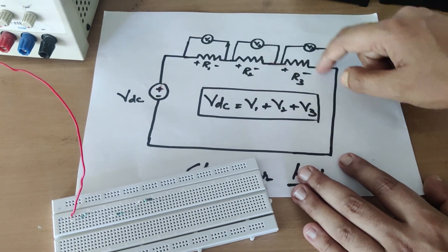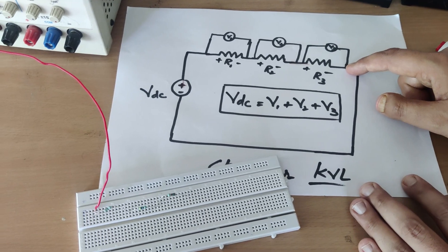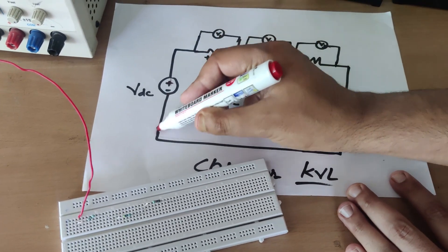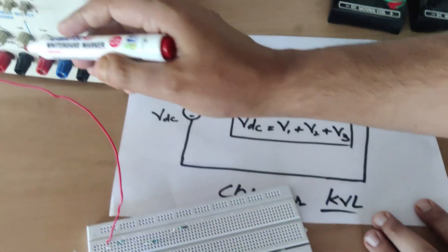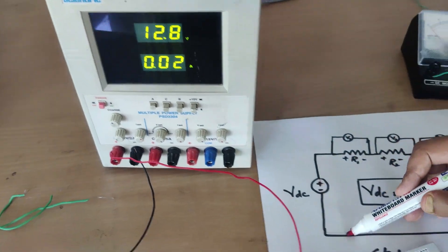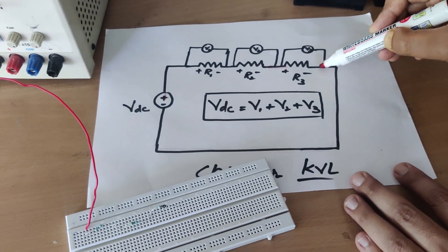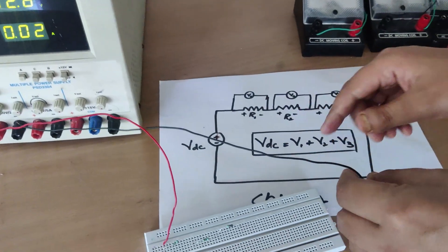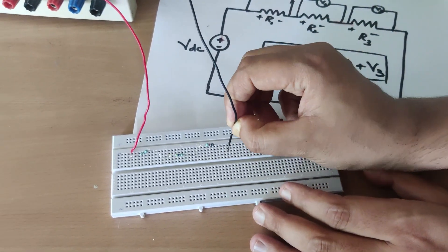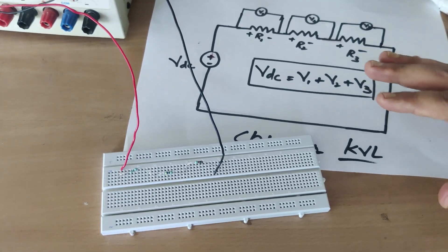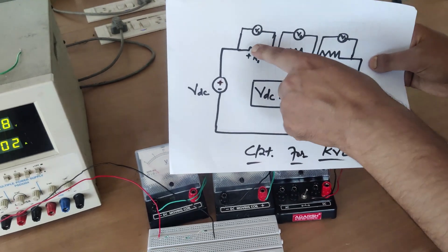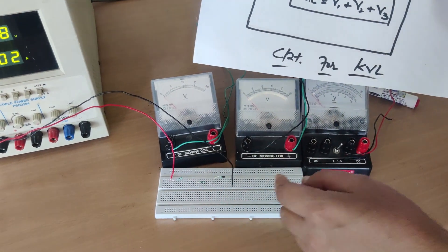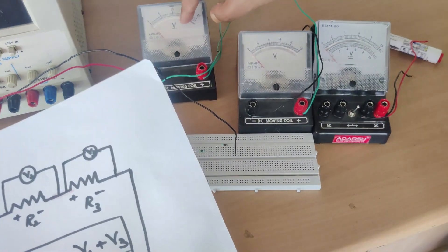The other terminal of R3 is connected to the negative of the supply. You can see the wire coming from the negative terminal of the DC supply — denoted by the black wire — going to one terminal of R3. I will connect it to R3, and the circuit is now complete. In the schematic diagram we also need to connect voltmeters V1, V2, and V3 across the three resistors. I will now connect V1 across R1.